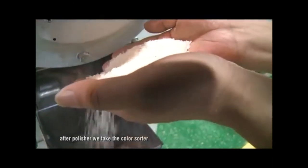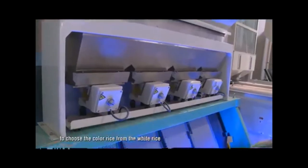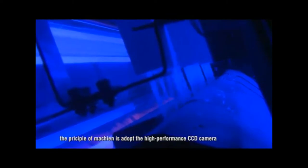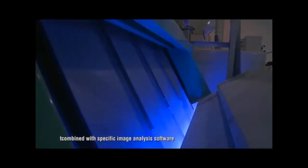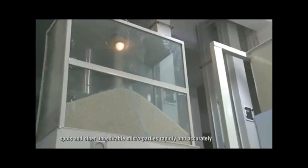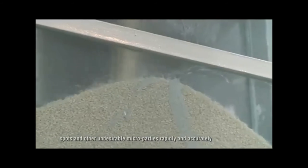After polisher, we take the color sorter to remove the colored rice from the white rice. The principle of machine is to adopt high-performance CCD camera combined with specific image analysis software. It can blow out the light yellow, spots, and other undesirable particles rapidly and accurately.